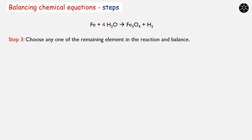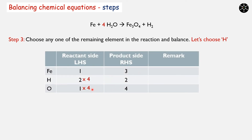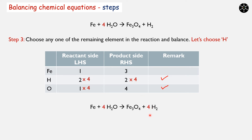Step 3: Choose any one of the remaining elements and balance it. Let us choose hydrogen. Oxygen is already 4 on both sides — balanced. Hydrogen: we have 8 on LHS but only 2 on RHS. To equate these, we multiply RHS by 4. Hydrogen is now balanced. Writing this coefficient in the equation, the equation takes up this form.